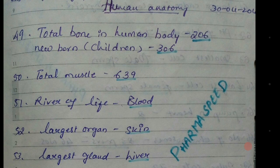Coming to the first question: total bones in the human body. In the human body, there are 206 bones. And for children — newborns — there are 306 bones.